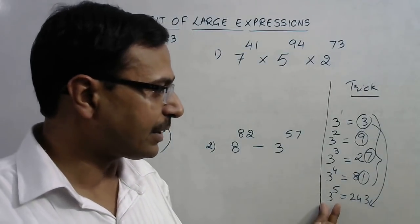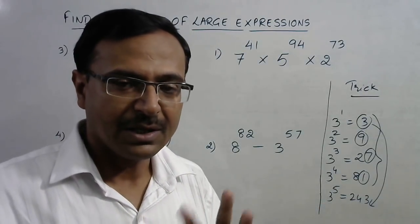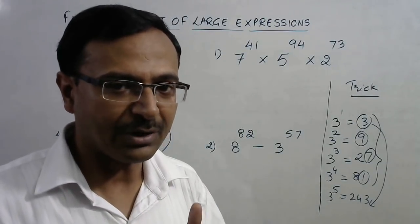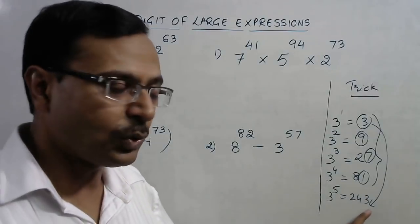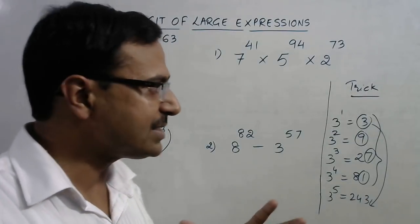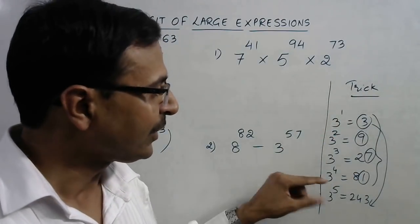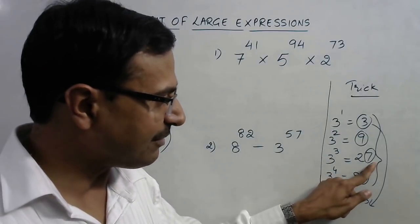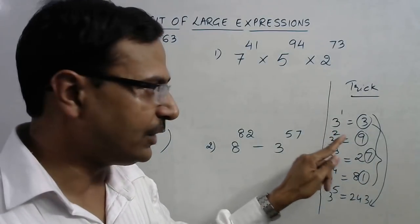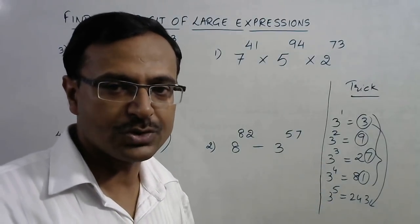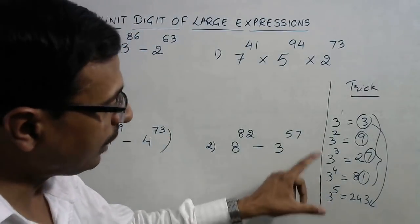Likewise, 3 raised to power 9—9 means you can eliminate 2 fours from there and you will have only 1 power left out, so that power will give you unit digit 3 again. Likewise, if after eliminating multiples of 4 from the power, you are left with 3, then the unit digit will be 7. If you are left with 2, then unit digit will be 9 and so on. This is the trick I am going to use and it is applicable for all bases.